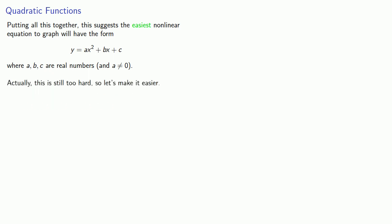Actually this is still too hard, so let's make it even easier. A can't be equal to zero, but if b equals zero and c equals zero, we have y equals ax squared, which is a second degree equation in two variables.